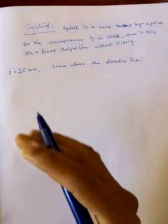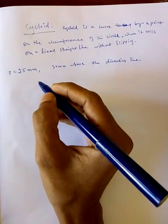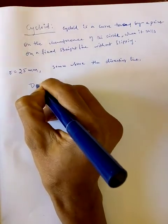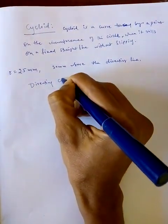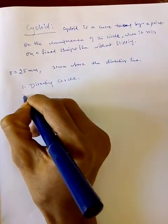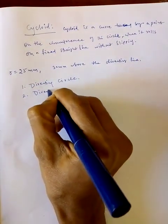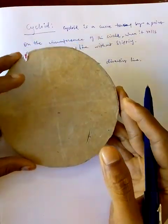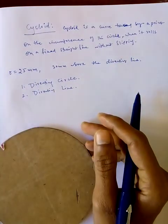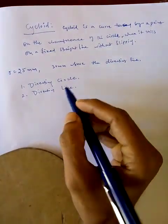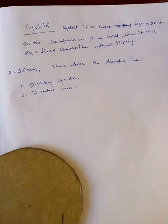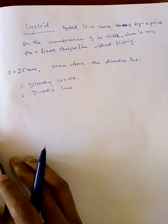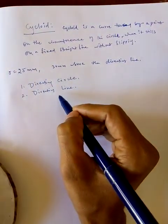Before constructing, let me explain two important terms. The directing circle is the wheel — the rolling circle itself. The directing line is the fixed straight line on which the circle rolls.